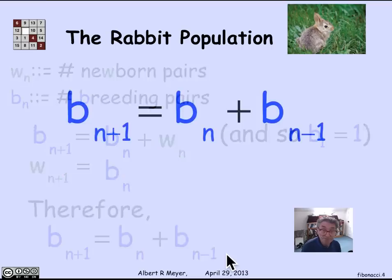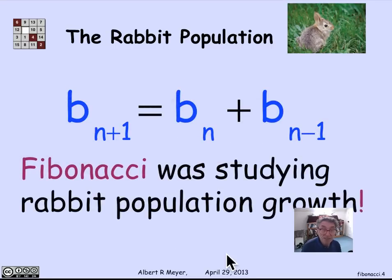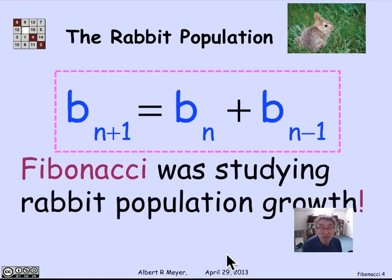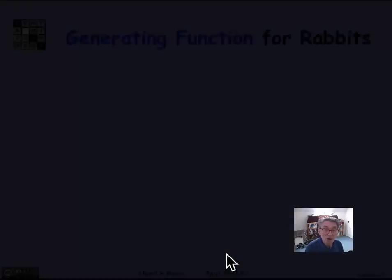Now that may look familiar. That's the recurrence. And in fact, it's the Fibonacci number recurrence. This is actually where the recurrence came from. Fibonacci in the 16th century was interested in studying population growth of various kinds of things. And he came up with this recurrence relation and went ahead and analyzed it.